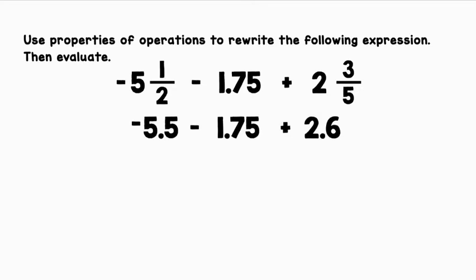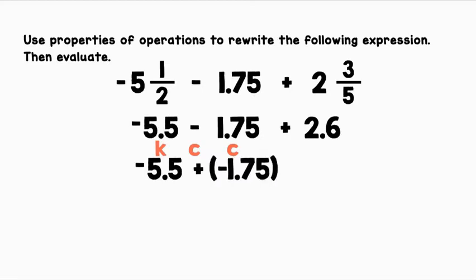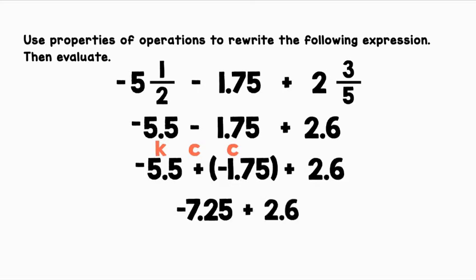Let's start evaluating from left to right. We will use the additive inverse to evaluate negative 5.5 minus 1.75. Let's keep negative 5.5, change subtraction to addition, and change positive 1.75 to negative 1.75. Negative 5.5 plus negative 1.75 is negative 7.25. Using the rules for adding integers, negative 7.25 plus 2.6 equals negative 4.65.